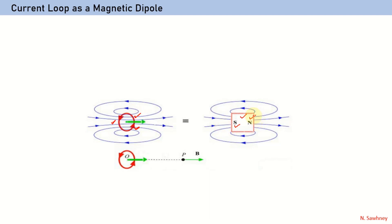The magnetic field lines originate from the north pole and end towards the south pole. What we have to do here is find the magnetic field at a point P which is lying on the axis of the current loop at a distance x from the center of the loop. The loop has a radius of a.